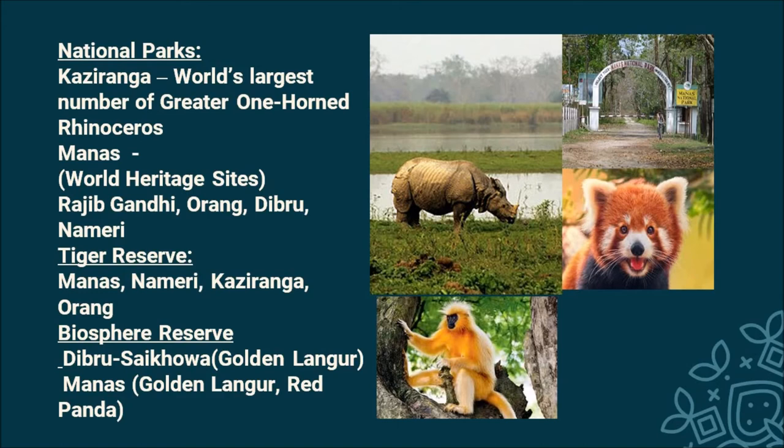The other important national parks are Rajiv Gandhi, Orang, Dibru, and Nameri. The other important tiger reserves are Nameri and Orang. Dibru-Saikhowa is one of the important biosphere reserves, which also preserves the Golden Langur.